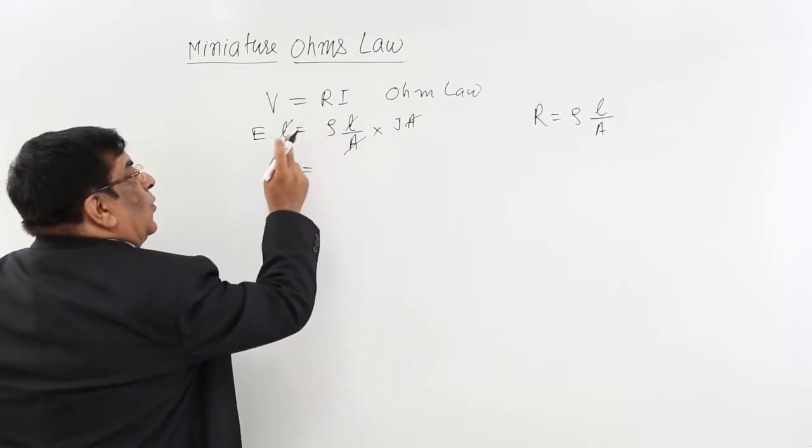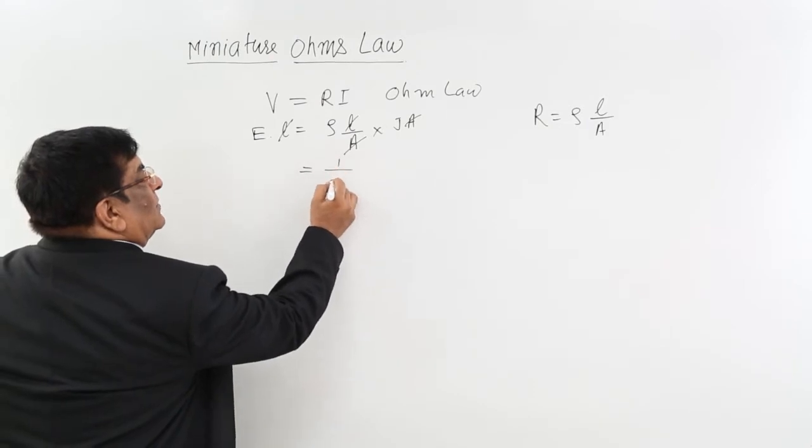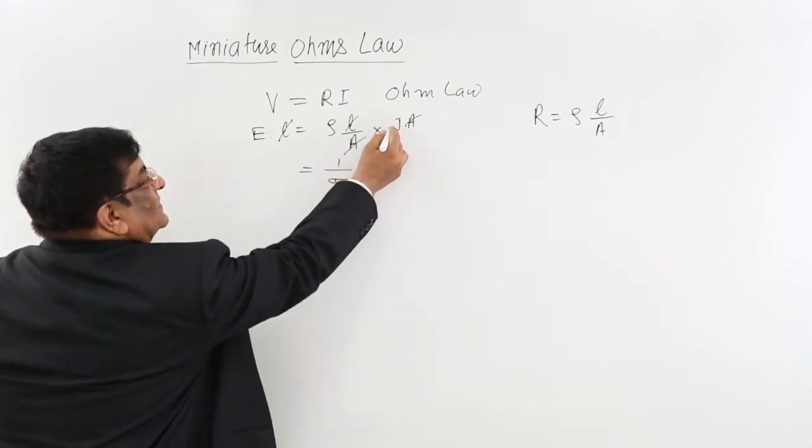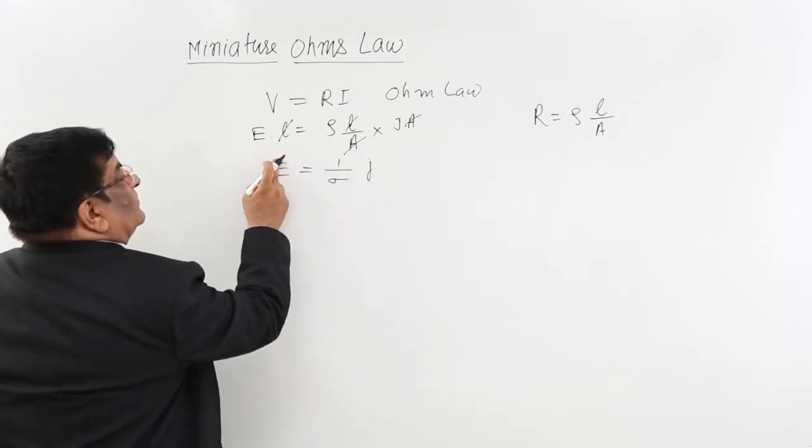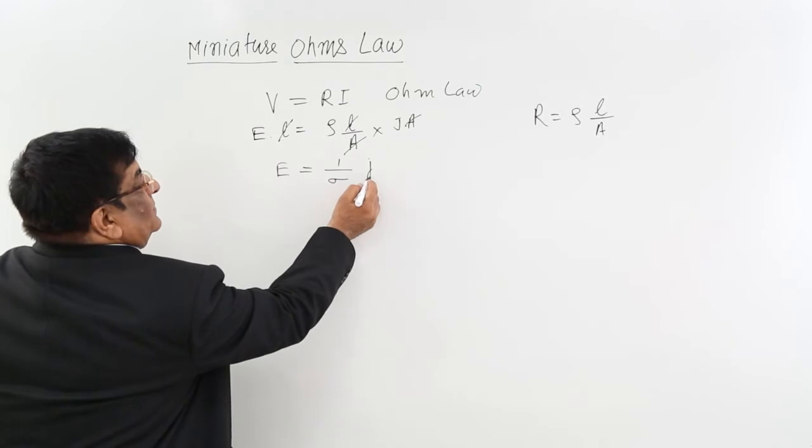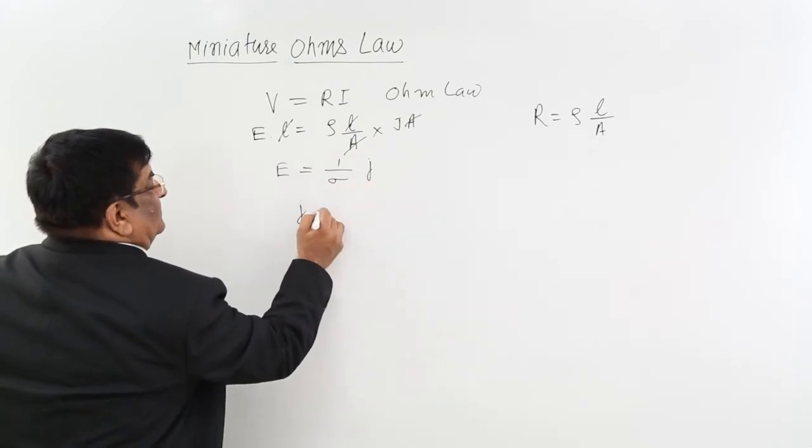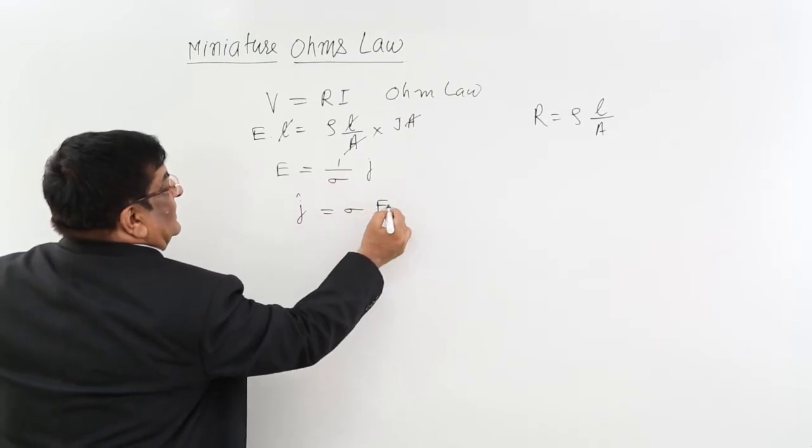Now rho is resistivity and equals 1 upon conductivity. This is J, this is A. And here we get J equals sigma times E.